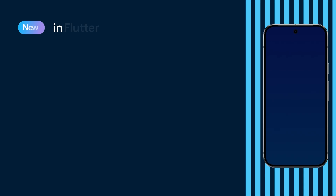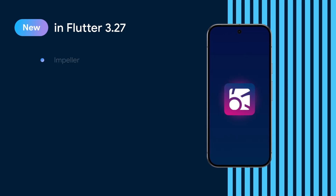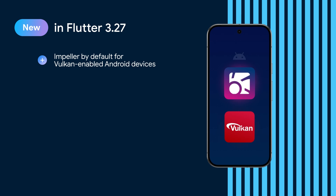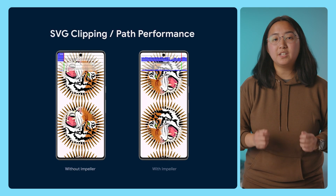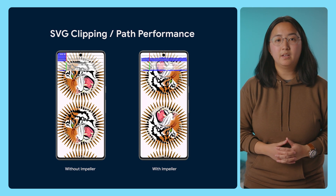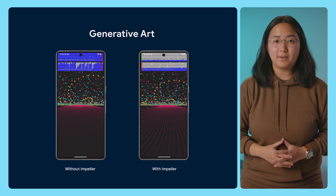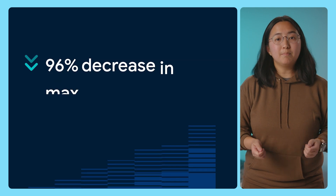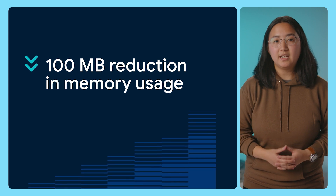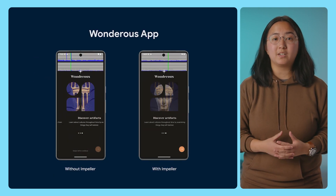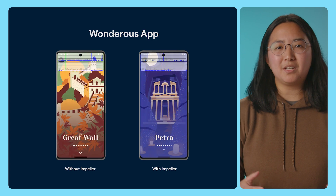We called it Impeller and introduced it to developers back in 2022. For over a year now, Impeller has been the default renderer for Flutter apps running on iOS. Flutter 3.27 marks the next step in our Impeller journey — Impeller is now also the default renderer on all Vulkan-enabled Android devices. Android devices without Vulkan support will continue to use Flutter's original rendering engine, Skia. We ran a number of benchmarks and we're really excited about the improvements. Using Impeller, we saw as much as a 97% decrease in max rendering times and a 100-megabyte reduction in memory usage while running the animation-heavy Wondrous app.